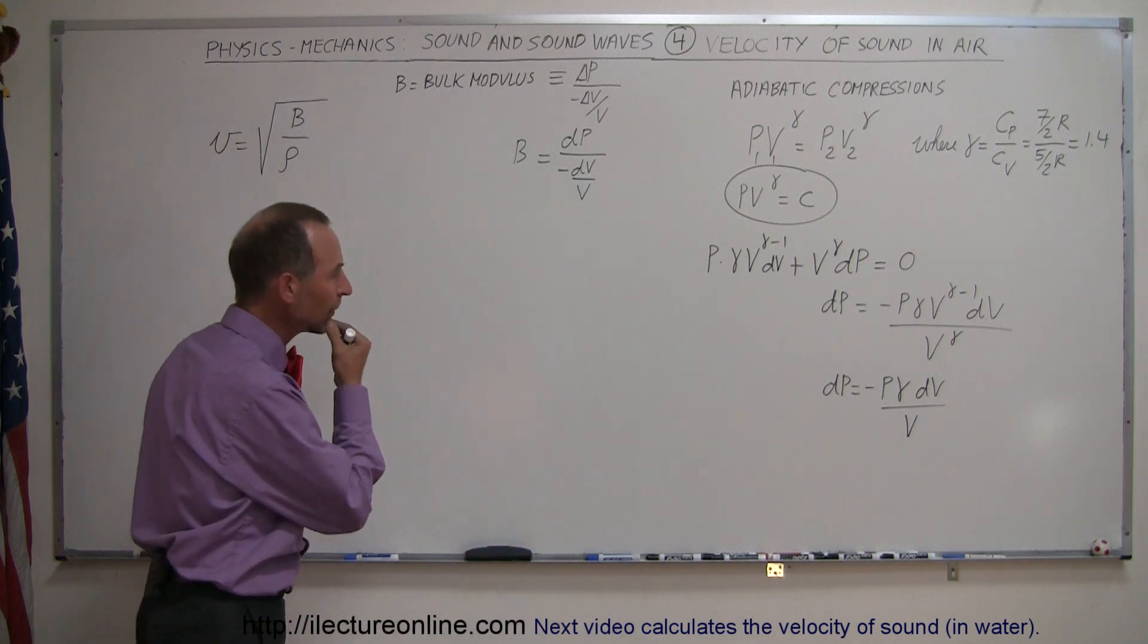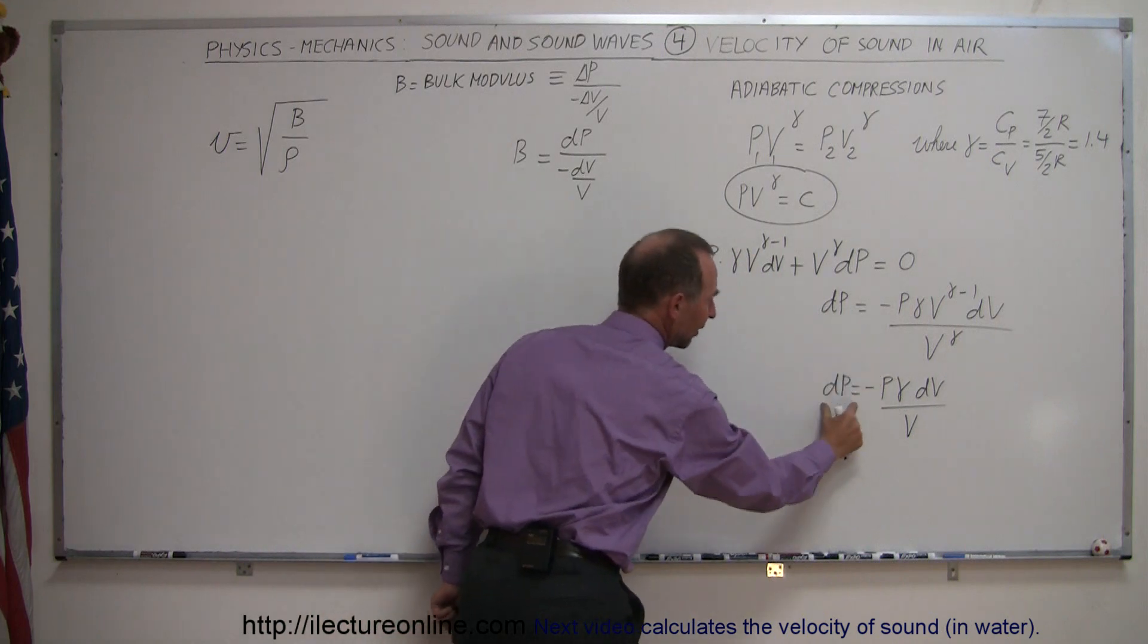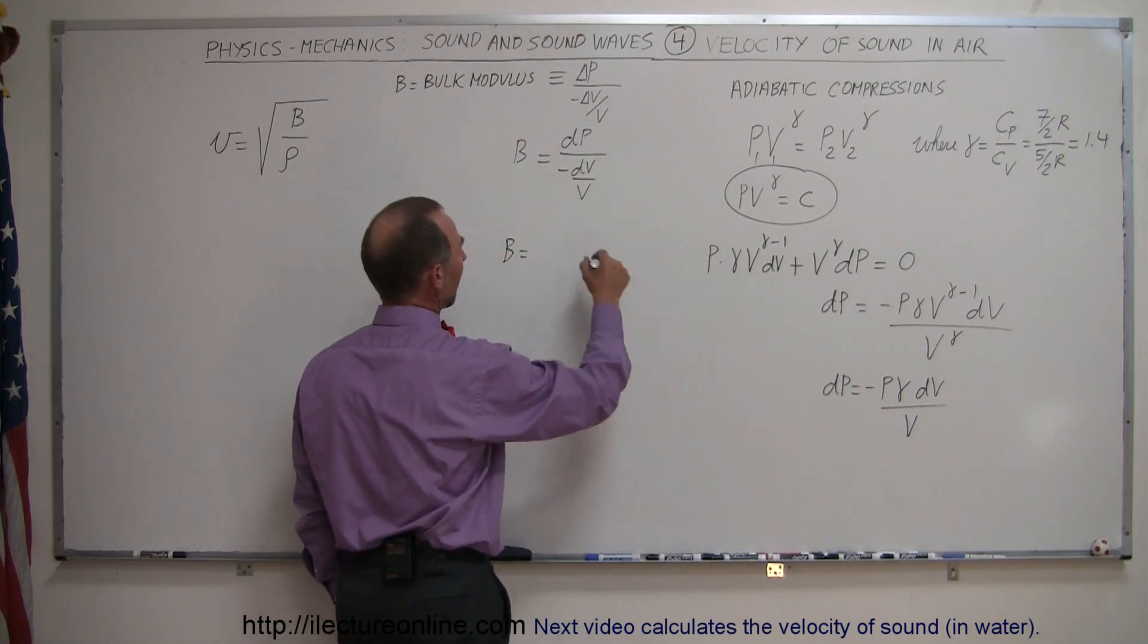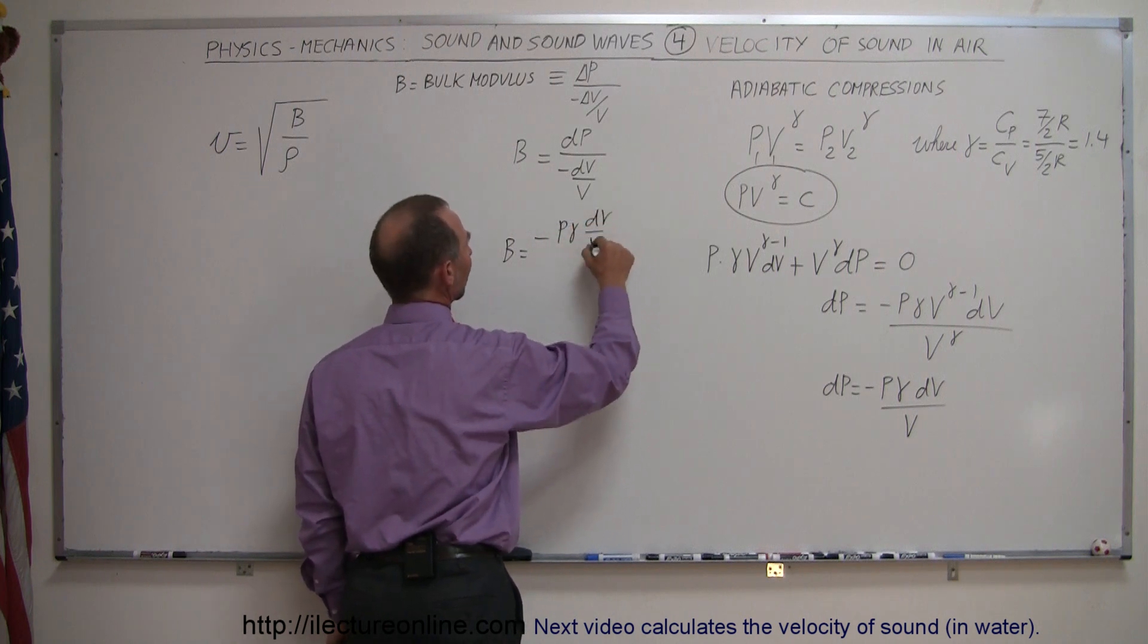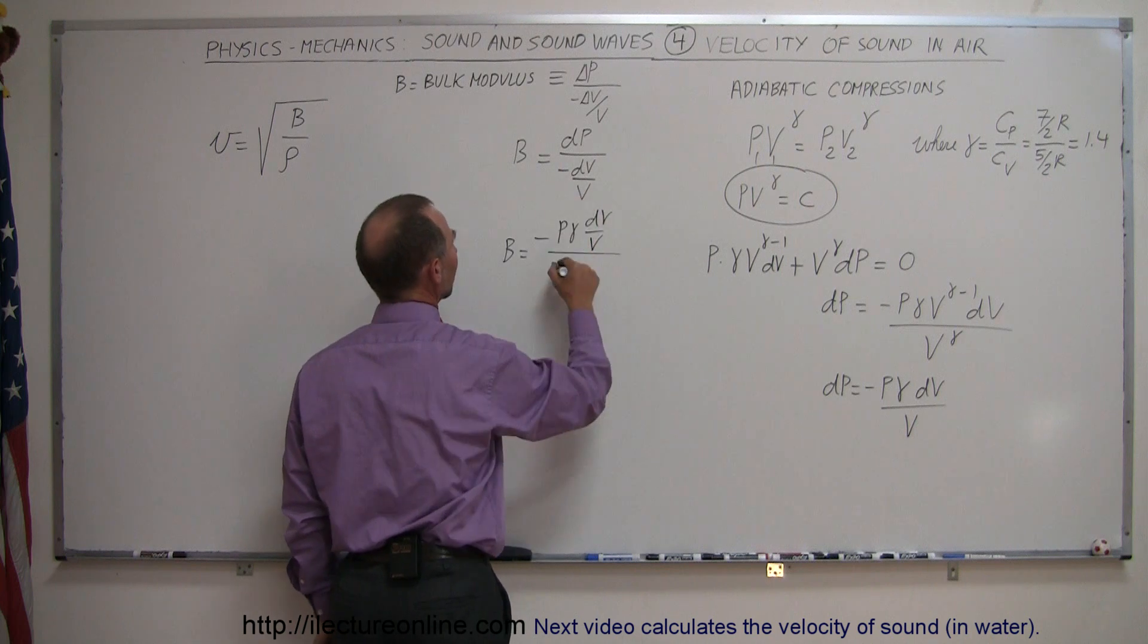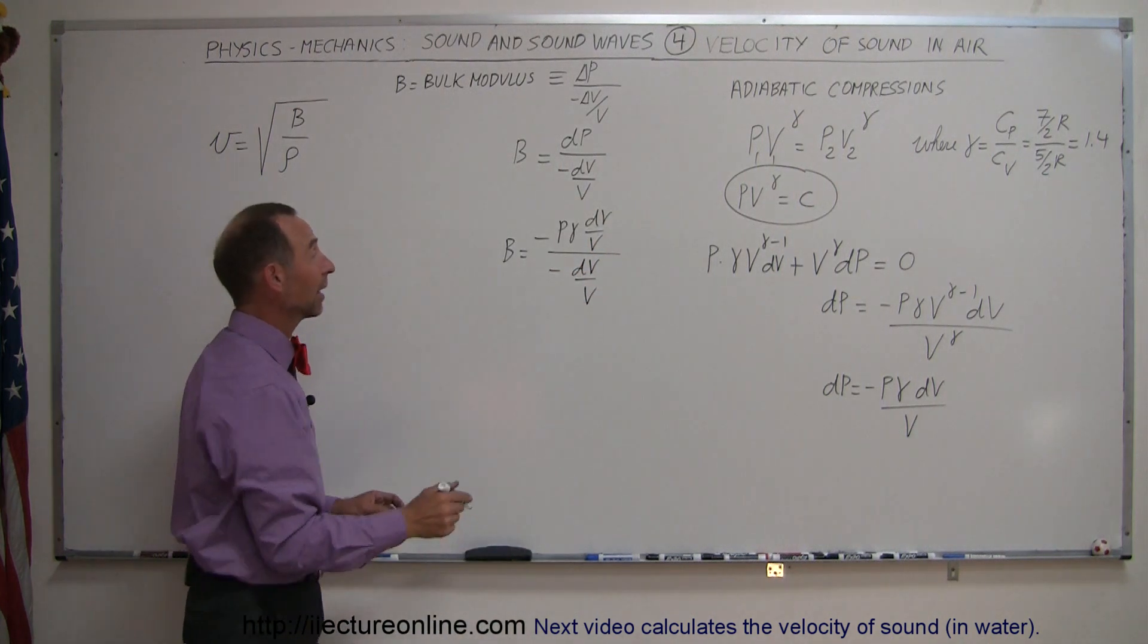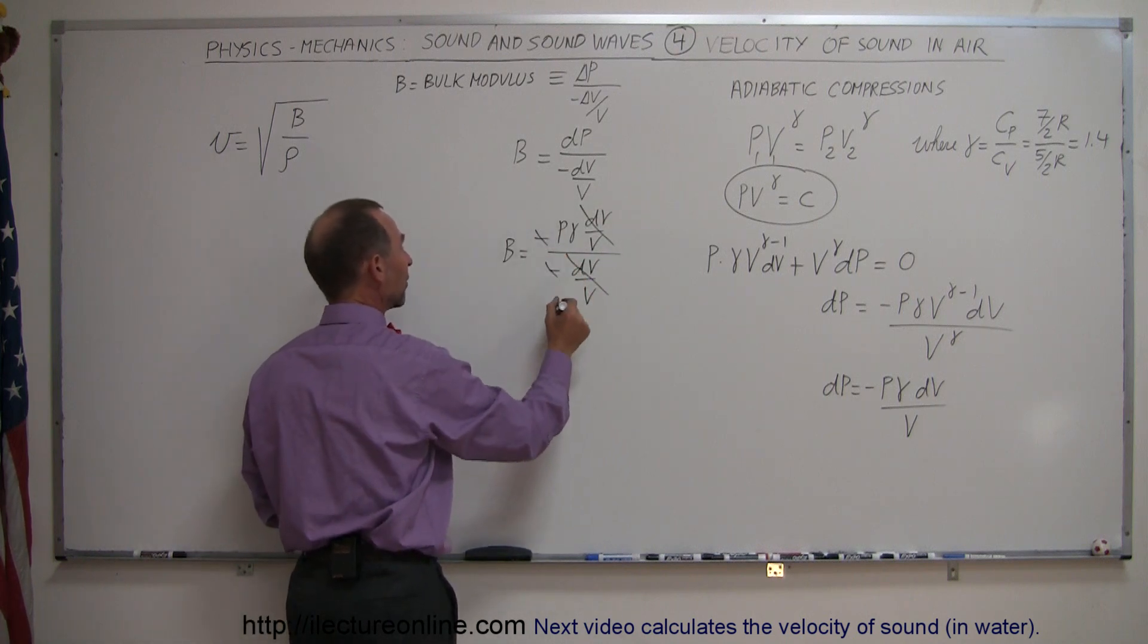Now I can replace this DP by this DP right here. So the bulk modulus equals minus P times gamma times DV over V, divided by the denominator, which is minus DV over V. You can see that this DV over V and this DV over V cancels, the minus cancels the minus,